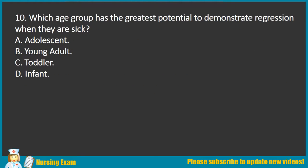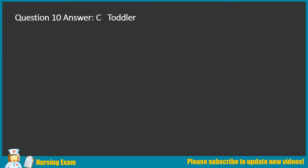Question 10. Which age group has the greatest potential to demonstrate regression when they are sick? A. Adolescent. B. Young adult. C. Toddler. D. Infant. Answer: C. Toddler.